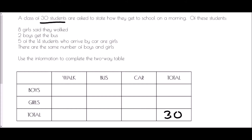We then look at the first piece of information: eight girls said they walked. We need to find where girls and walk come together in the table — and so eight goes in that box. There are two boys who get the bus. Here are the boys and here is the bus, so the place where they meet is right here, and two will go into that box.